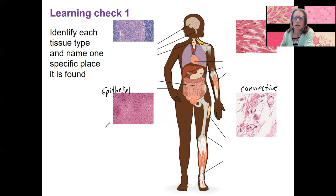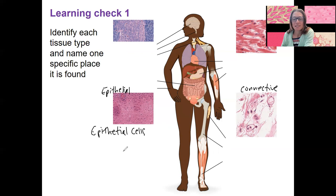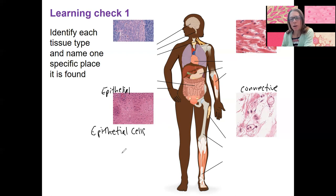Epithelial tissue is going to have epithelial cells — that one is pretty easy. There are different shapes and sizes we'll see, and we'll cover that in the epithelial lecture. There will be some specific types of epithelial cells as well as some that are specialized with certain functions. Sometimes they'll have a few other names, but we won't introduce those now.